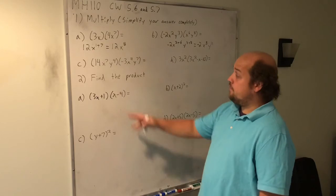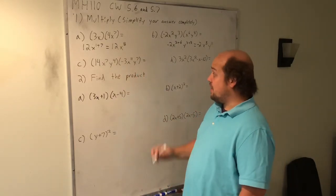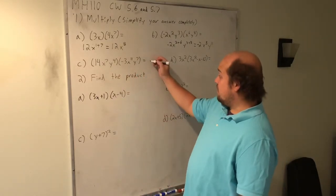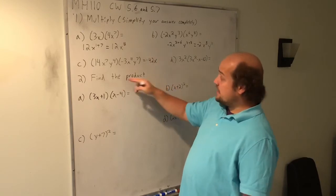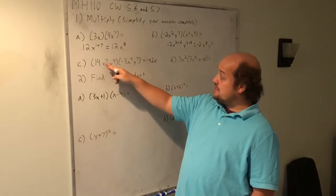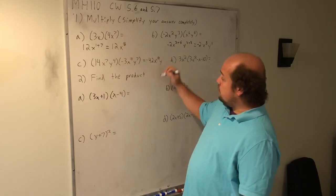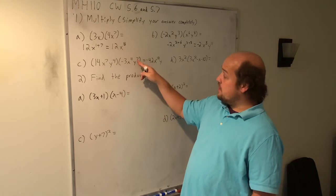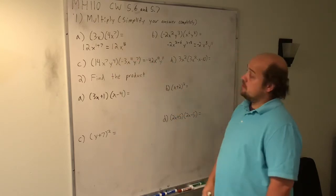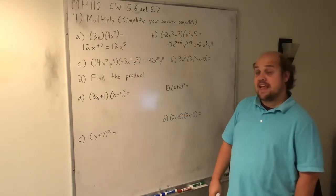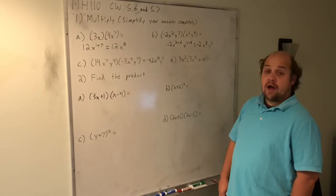When I do 14 times negative 3, I probably want a calculator to help me out, but I should get negative 42. On the x terms, there's a 7 here and an 11 here. When I add those, I get 18. And on the y terms, there's a 4 here and a 7 here. When I add those, I get 11. That's why my final answer is negative 42, x to the 18th, y to the eleventh.